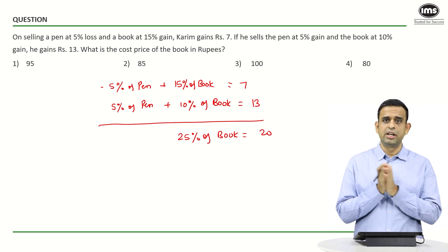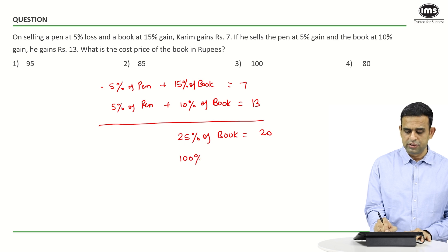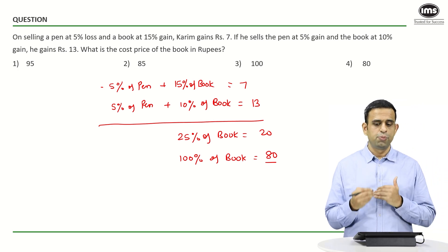So if 25% means 20, can we say what does 100% mean? Nothing but four times, and that will give you 80 as the answer. So my answer for this particular question should be option number four.